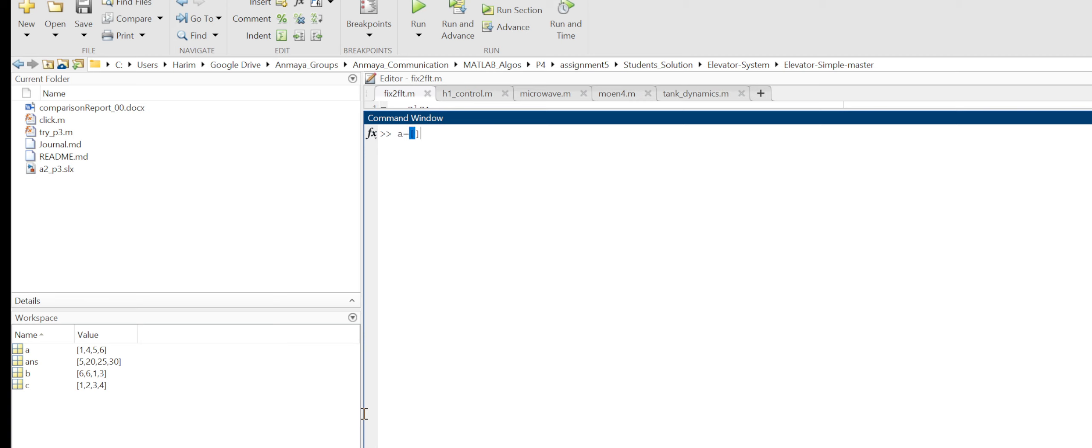A equals to 1, 2, 3, 4. If I take A transpose is going to be 1, 2, 3, 4, it changes from a row vector to column vector.